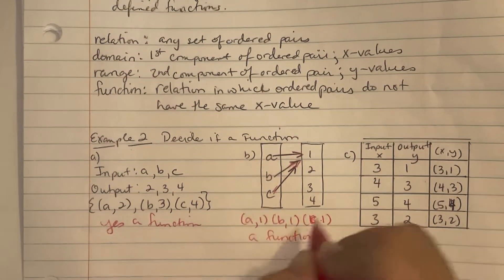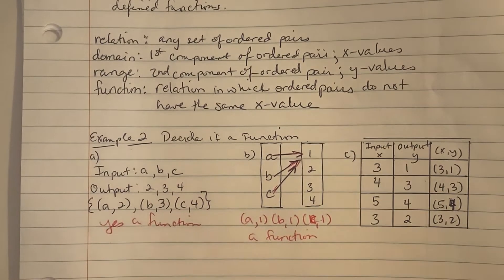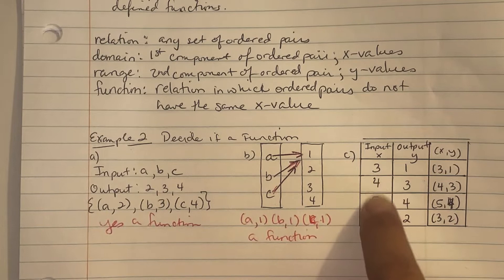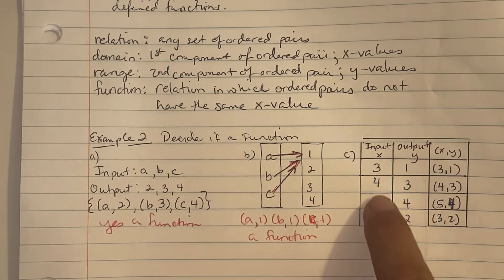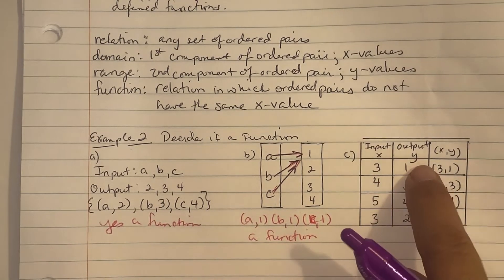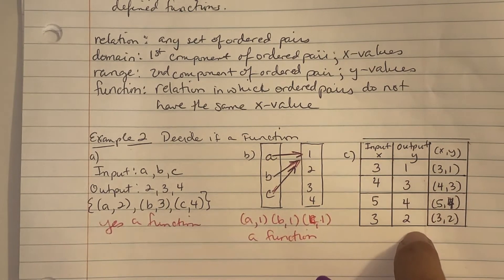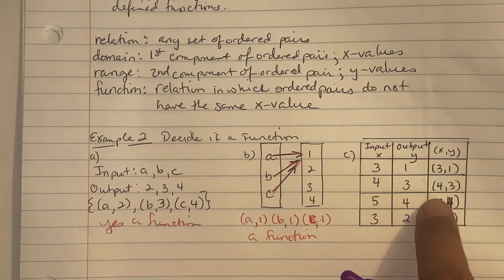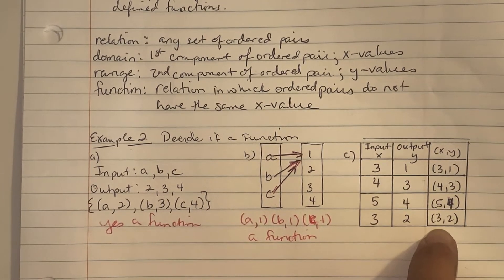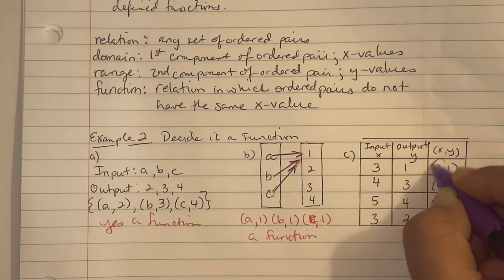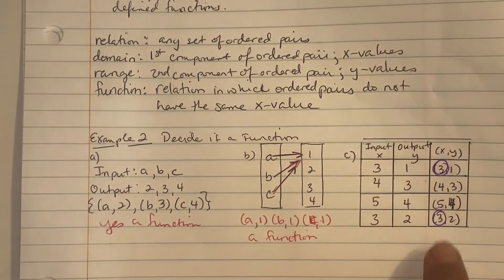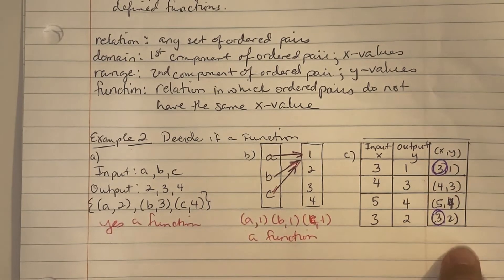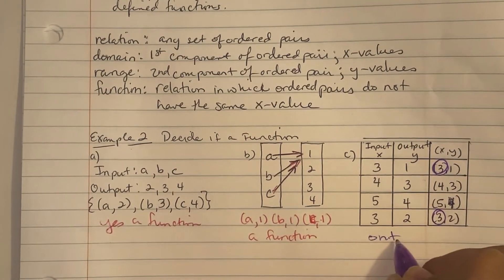For the next one, the x inputs are three, four, five, and three, with outputs one, three, four, and two. So we have ordered pairs (3,1), (4,3), (5,4), and (3,2). The moment we saw the input value of three repeated twice, this is not a function.